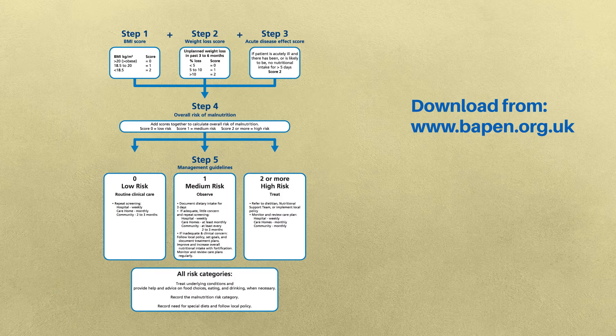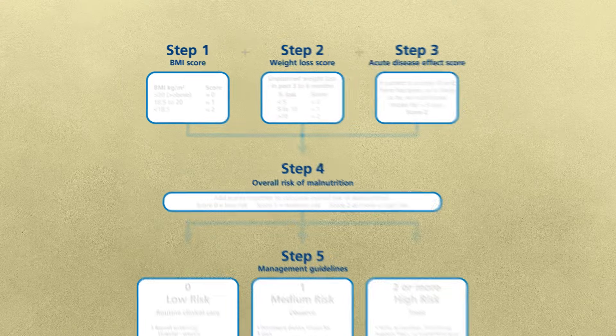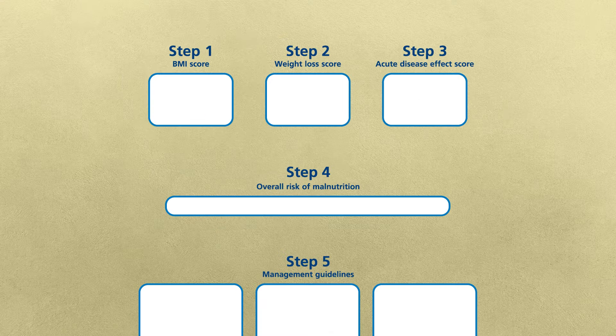The MUST tool looks like this and you would access it through bapen.org.uk. As you can see, there are five steps to completing a MUST tool.